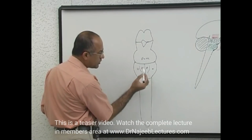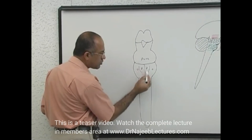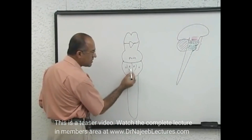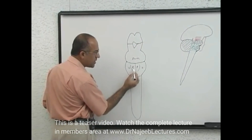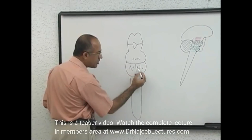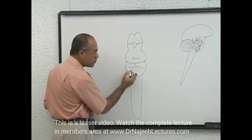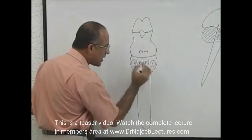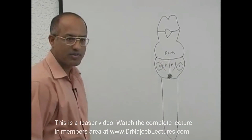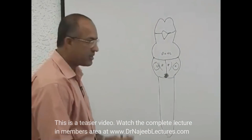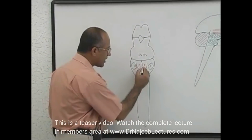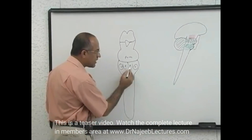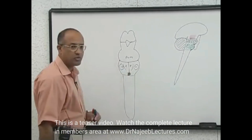An important surface relationship of the medulla: when you view it from the front, it has two longitudinal medial swellings called pyramids. Lateral to the pyramids there are two more swellings called olives. There is a central sulcus, on the side of which are the pyramidal swellings, and on the side of those are the olivary swellings.